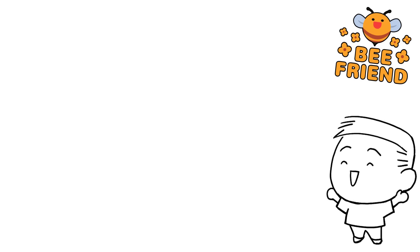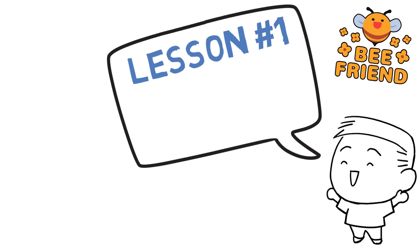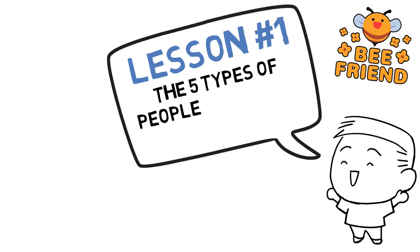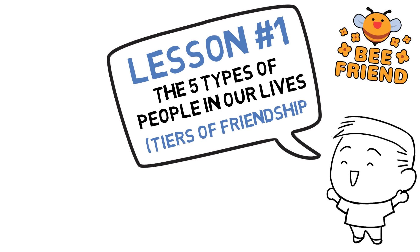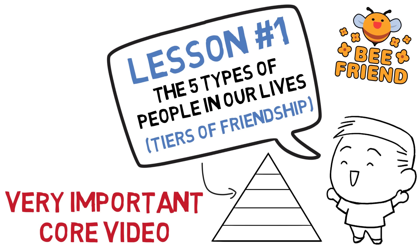Welcome to lesson 1 of the Befriend course. This is a course that will teach you how to befriend others, to become more likable, and to gain the ability to form deep and meaningful relationships wherever you go. We're going to start off the course by discussing the five types of people in our lives, also known as the tiers of friendship, because just like a pyramid, the majority of people will fall into the lower tiers while only a select few make it to the top. Make sure you watch this video till the very end because the rest of the course will be built upon the concepts we discuss here.